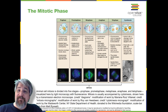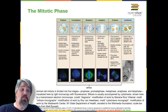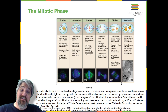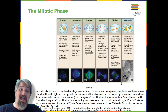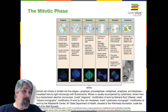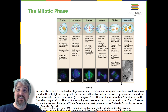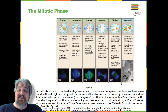Mitosis is divided into a series of phases: prophase, pro-metaphase, metaphase, anaphase, and telophase, that result in the division of the cell nucleus.